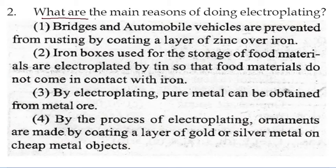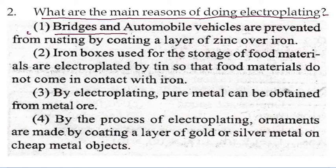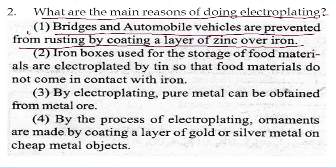What are the main reasons for doing electroplating? First, bridges and automobile vehicles are prevented from rusting by coating a layer of zinc over iron. To protect iron from rusting, a zinc coating is applied over it.